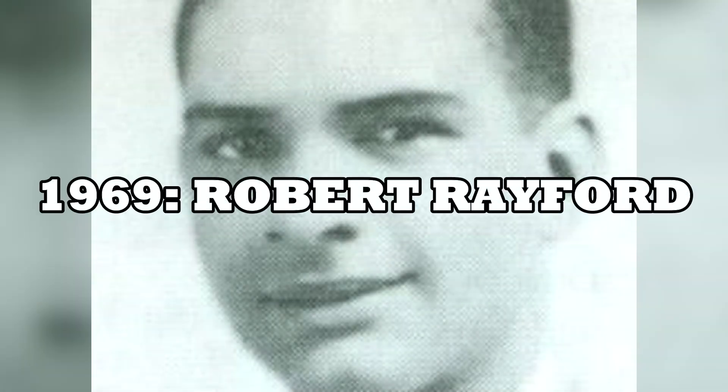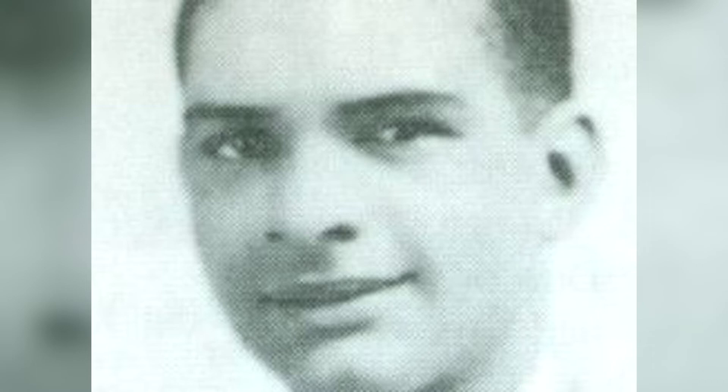1969, Robert Rayford. In May 1969, 16-year-old African-American Robert Rayford died at the St. Louis City Hospital from Kaposi's sarcoma. In 1987, researchers at Tulane University School of Medicine detected a virus closely related or identical to HIV in his preserved blood and tissues. The doctors suspected he was a prostitute or the victim of sexual abuse, though the patient did not discuss his sexual history with them in detail.